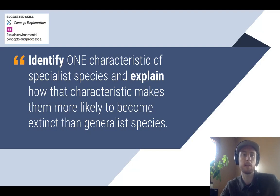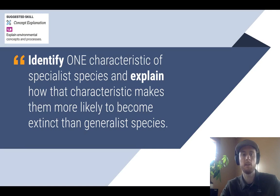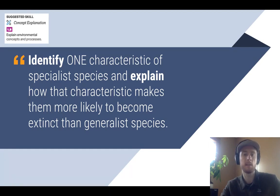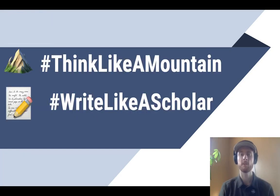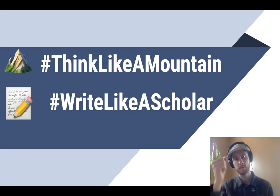We'll wrap up today by practicing an FRQ that will involve concept explanation. You want to identify one simple characteristic of specialist species, but then explain how that characteristic makes them more likely to become extinct than generalist species. Thanks for watching today — don't forget to like this video if it was helpful and subscribe for future APES video notes. And as always, think like a mountain, write like a scholar.